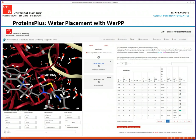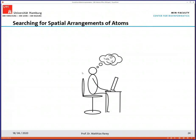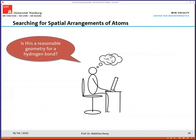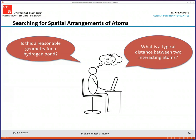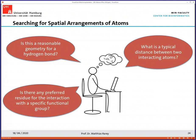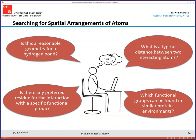Now I want to come to a very new topic where most of the technology has not been published so far. Our aim in the last year was to get a way to make spatial arrangement searching — geometric searching in the PDB — possible. There are lots of questions related to geometry: Is this a reasonable geometry for a hydrogen bond? What is the typical distance between interacting atoms? Is there a preferred residue for an interaction with a specific functional group? Which functional groups can be found in similar protein environments? All these questions have a geometric flavor, and web-based services are generally not able to answer them. We started developing a technology for this called Pelikan.